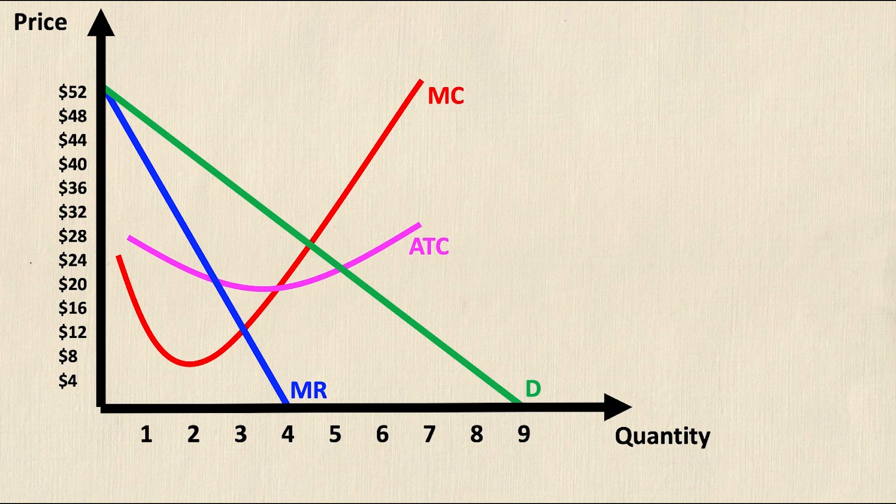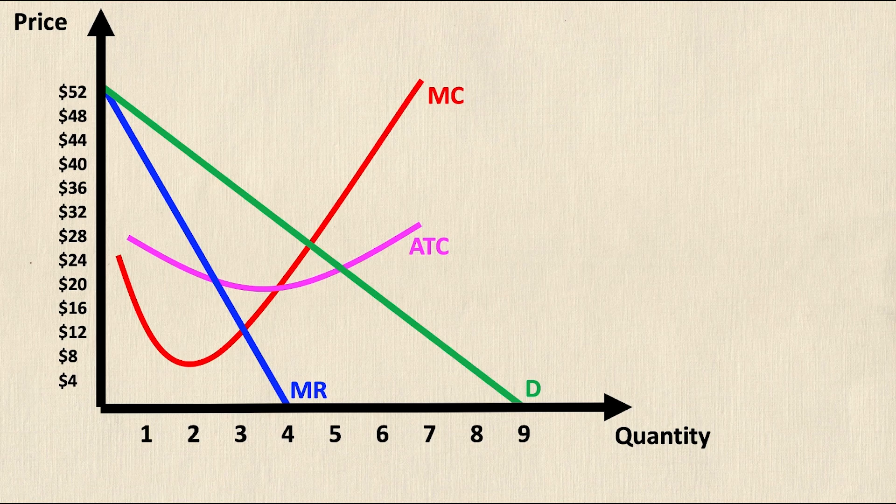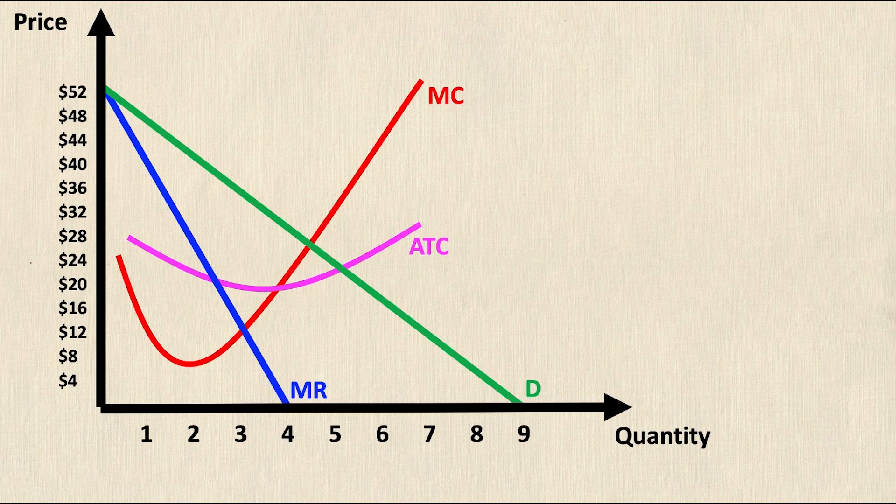So starting off we have just our basic monopoly graph. We have the marginal revenue, marginal cost, average total cost and demand curves all plotted on a price and quantity axis.